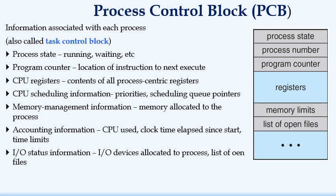Then if the running process needs any file to complete its operation, this PCB will contain information about the list of open files also. It contains information about accounting details like how much CPU time is used, what is the clock time elapsed since start and the time limits. Then what are the different I/O devices allocated to your process. All those information will be stored in the process control block. In general, all the control information of a particular process will be stored in this process control block.